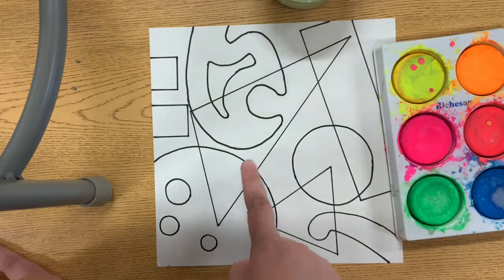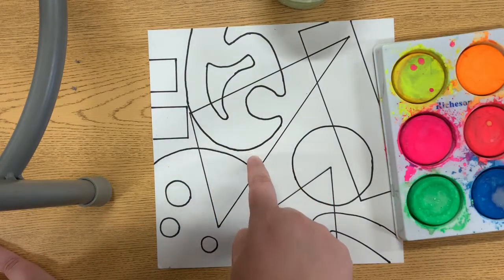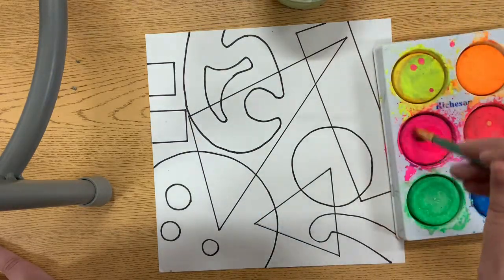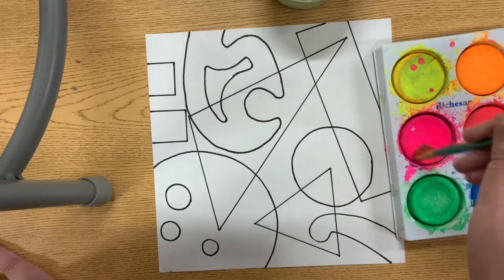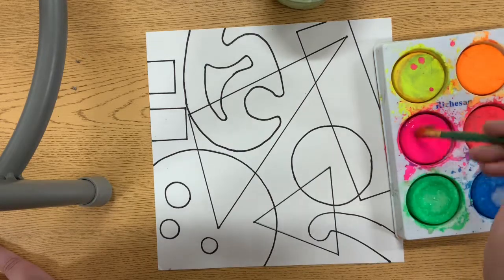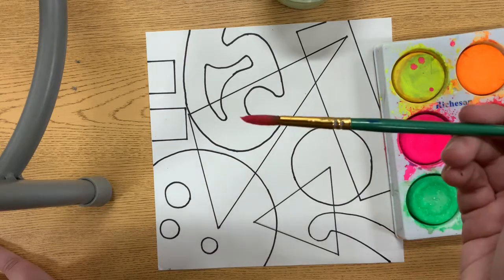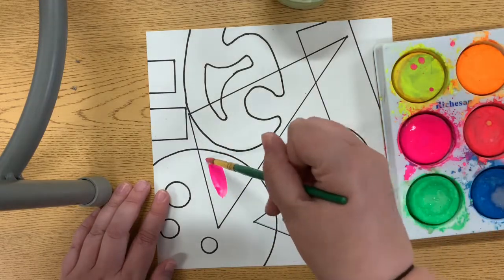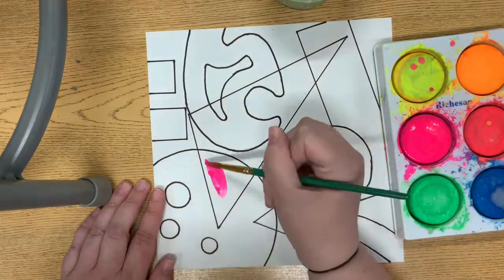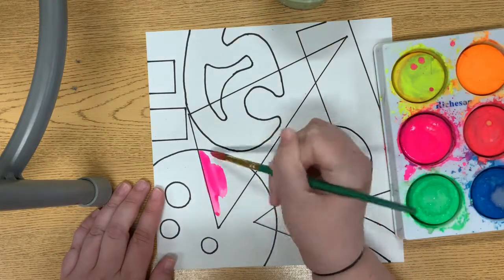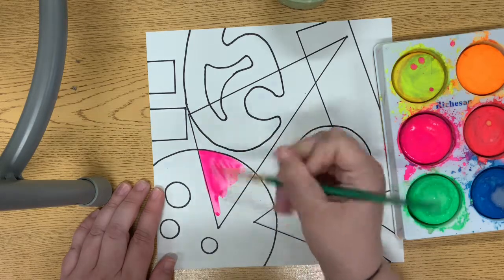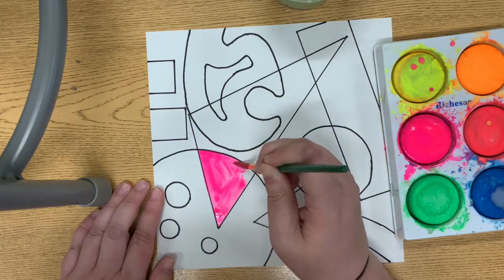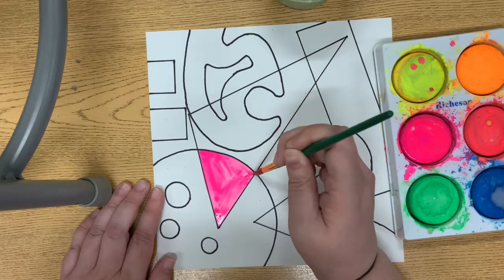You want each shape to be a different color. I'll start by getting my brush wet and swirling it to wake up this bright pink paint. You can tell when it's ready because you have paint on your brush. Then I'll paint this triangle - oh, that's such a pretty color. As I'm painting, I want to stay inside the lines, so I'm going slow and being gentle.